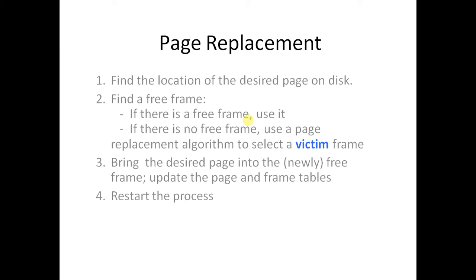We are going to learn about basic concepts of page replacement algorithms and page replacement techniques. Any program present inside secondary memory, if it needs execution, requires frames or main memory to execute itself. The program or instruction code inside secondary memory is divided into fixed-size blocks known as pages, and these pages are allocated in frames or fixed-size blocks in primary memory or RAM in order to execute themselves.